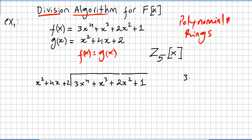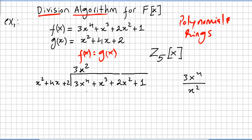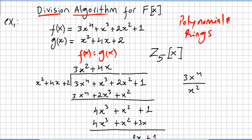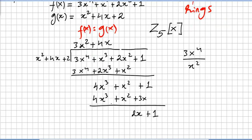So we are dividing 3x to the power of 4 by x squared. In Z5, dividing 3 by 1 is 3, so we get 3x squared. I'm going to use the long division algorithm here. In some other countries people divide in a different way, so I will demonstrate both. The division is done — 2x plus 1 is the remainder.